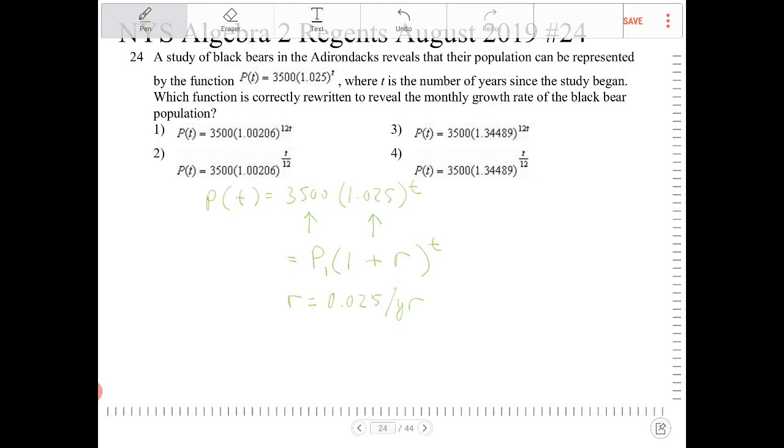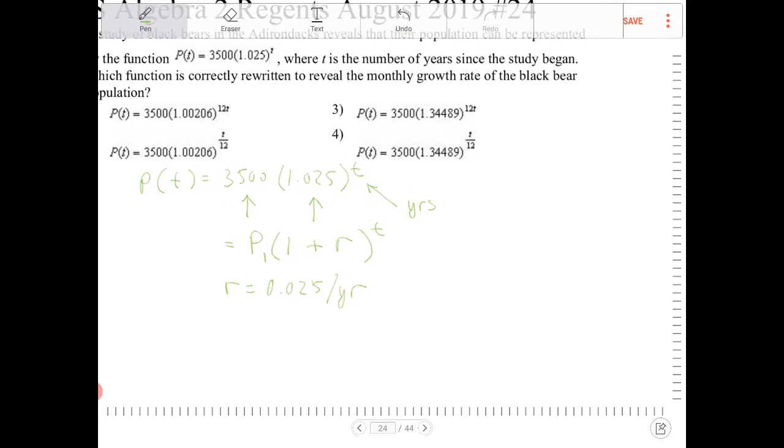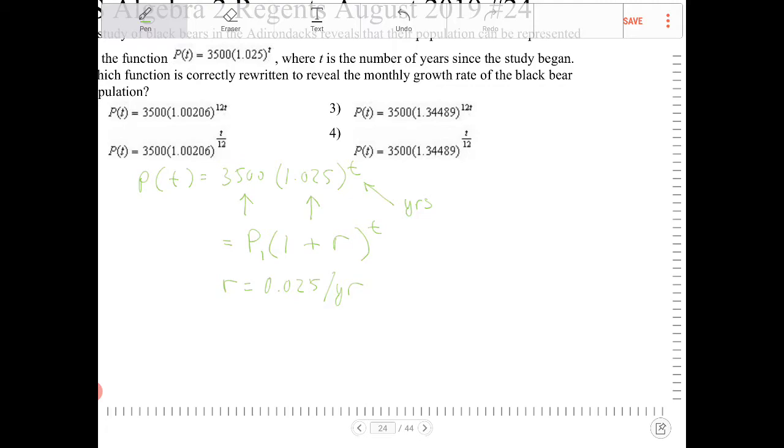So how are we going to do that? t right now in the original is measured in years. So I want to do a little trick. I recognize the following: that in a year there are 12 months. This doesn't change anything, because 12 over 12 times t is still t.